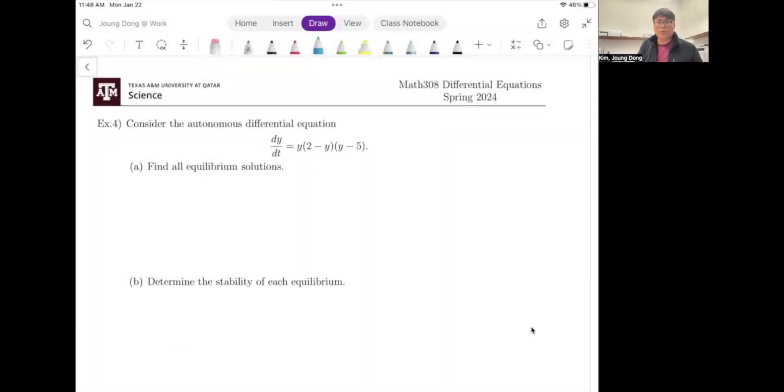Let me give you another example. Finding equilibrium solution is the first step, which means we're going to do dy/dt equal to 0. What is my dy/dt? That is y times (2 minus y) times (y minus 5), and we're going to set that equal to 0. You can easily find your equilibrium solutions or critical numbers are 0, 2, and 5.